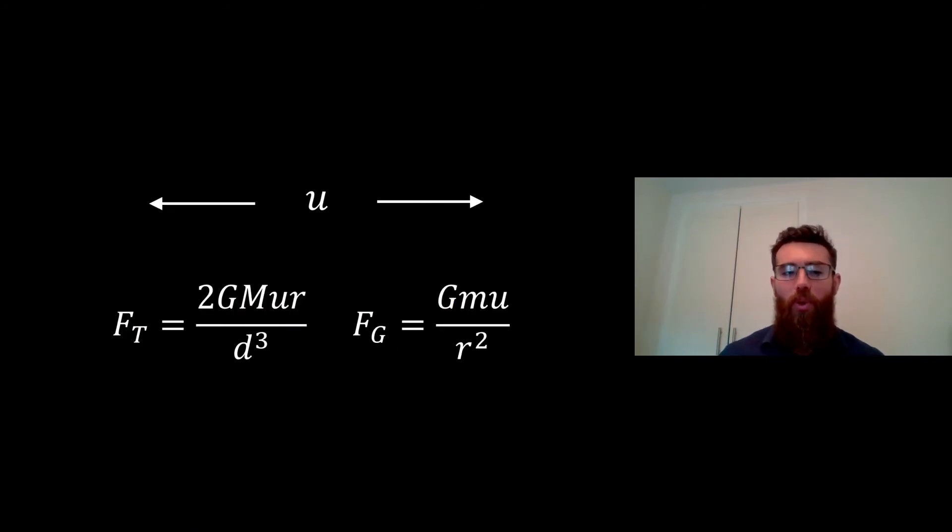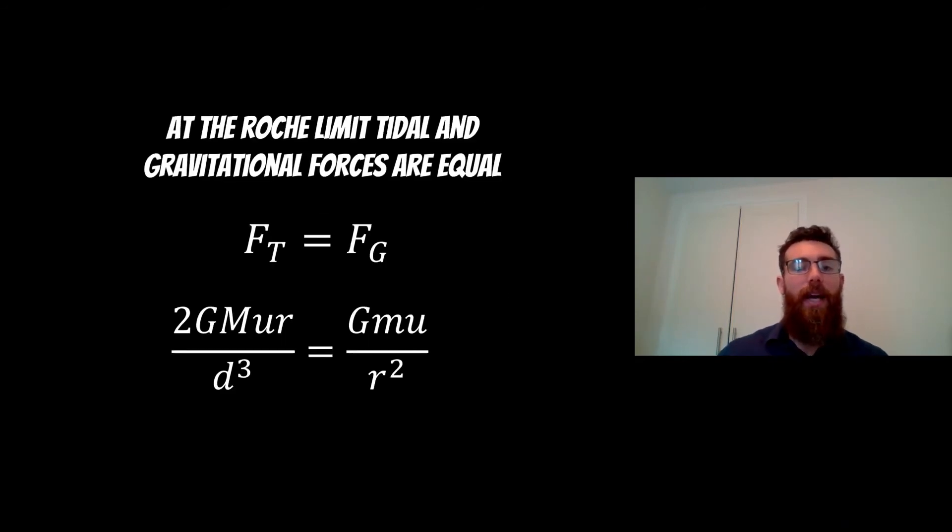So there we go—we can actually put the equations for both of those there. We've got the tidal force on the left and then we've got the gravitational force on the right. Now since at the Roche limit both of these forces are equal, so they're balanced when they're at the Roche limit. If it goes within it then the tidal force is going to win, and if they're outside of it then the gravitational force is going to be greater. But at the limit they're equal, so we can basically equate these two to one another.